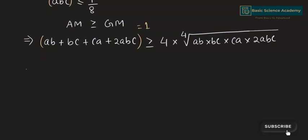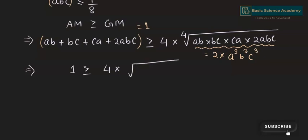So 1/4 is greater than or equal to the fourth root of 2 · a³ · b³ · c³, which is the fourth root of 2(abc)³. To remove the fourth root, we raise both sides of the inequality to the power of 4.